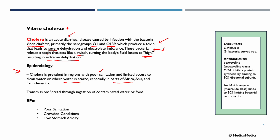Cholera is especially prevalent in parts of Africa, Asia, and Latin America. Transmission occurs through ingestion of contaminated water or food. Risk factors include poor sanitation, crowded conditions, and low stomach acidity. People with reduced stomach acid, perhaps due to medications or illness, are more susceptible, because the acid normally present in the stomach kills many bacteria.